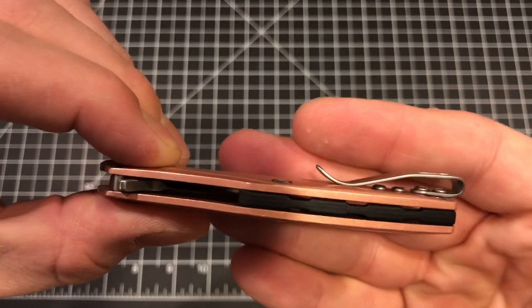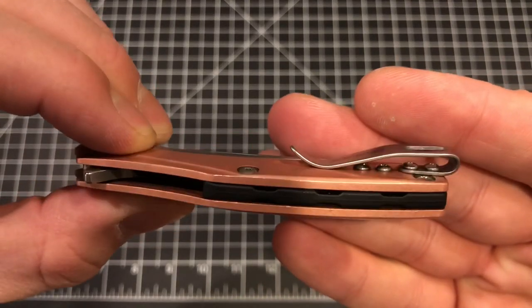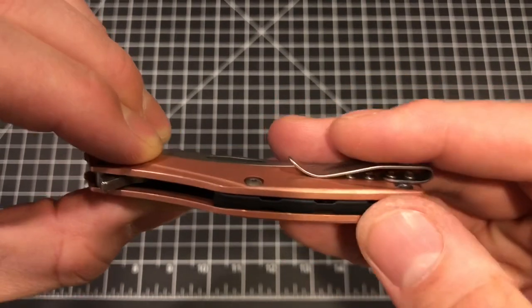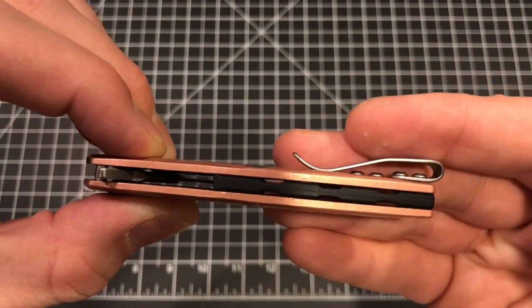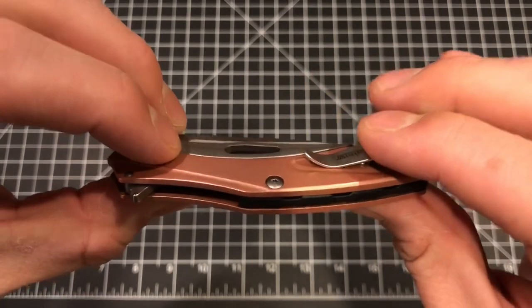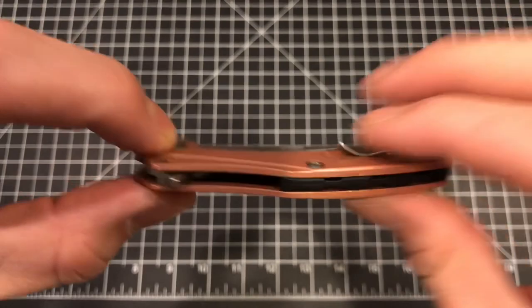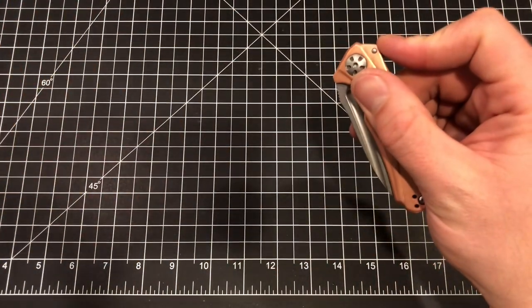It does have a backspacer, which I don't love the backspacer necessarily, but I can get over it. It looks to be plastic. I don't think it's G10, but just a black kind of partial backspacer that runs about half the length of the knife there. So it does have a backspacer.